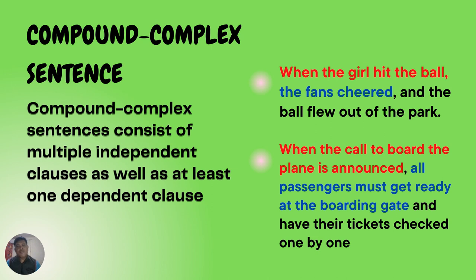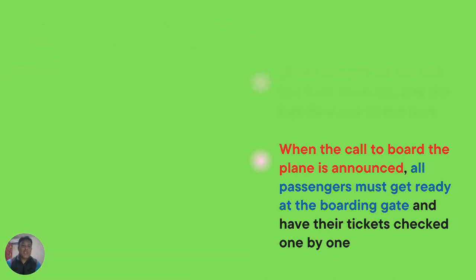From the second example: 'When the call to board the plane is announced, all passengers must get ready at the boarding gate and have their tickets checked one by one.' Here, 'when the call to board the plane is announced' is the dependent clause, and 'have their tickets checked one by one' is the second dependent clause, while 'all passengers must get ready at the boarding gate' — shown in blue — is the independent clause. That concludes the examples of compound-complex sentences.